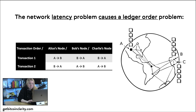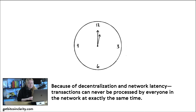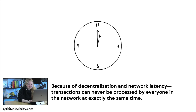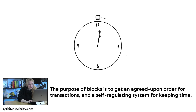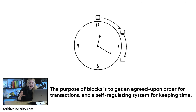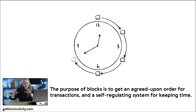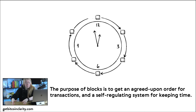This is part of the reason why cryptographers didn't believe Bitcoin could exist — because of general relativity, latency, and the relativity of space-time, they thought you could never have a functioning decentralized network. Because of decentralization and network latency, transactions can never be processed by everyone at exactly the same time. But we can lower our standards of what 'exactly the same time' means — and that's what a block is. It's a lowering of the standard of time. The purpose of blocks is to get a generally agreed-upon order for a specific time period — all these transactions occurred at roughly the same time, and we call them confirmed by putting them in a block.